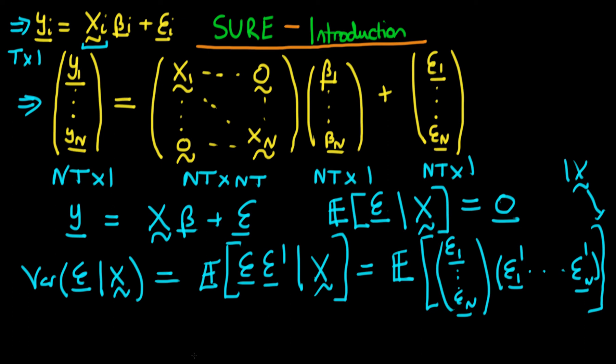And we're going to use this in the next video to actually help us derive the variance-covariance matrix, and that's going to tell us a little bit about the estimation strategy we need to use for SURE systems.